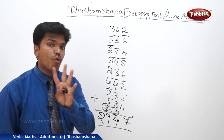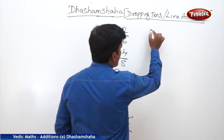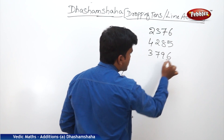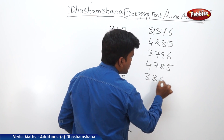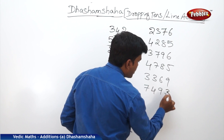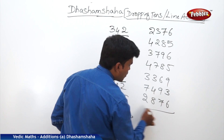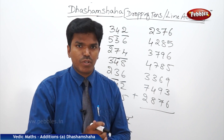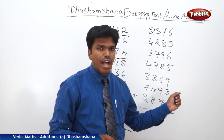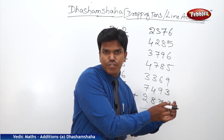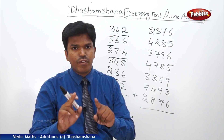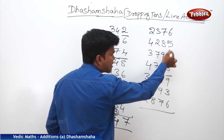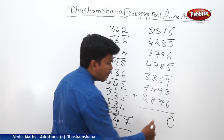Let us take a 4-digit example. The numbers are: 2376, 4285, 3796, 4785, 3369, 7493, 2876. Now let us add this one — this time I will go a little fast. Remember, I will say only the remaining ones after dropping 10, not the full sum. Start from the rightmost column: 6, 3, 9, 9, 8, 8, 5, 3, 6, 9, 9, 5, 4, 4, 6 — remaining 0. How many tens? 4 tens. Carry 4 to the next line. Second line: 4, 7, 1 — remaining 1. Then 1, 9 — remaining 0, start freshly. 6, 8, 4, 4, 9, 3, 3, 8, 1 — remaining 1. Then 1, 7 — remaining 8. How many tens? 5 tens. Carry to next line.